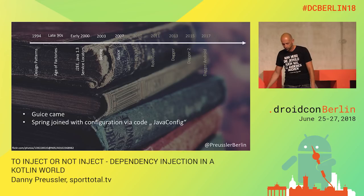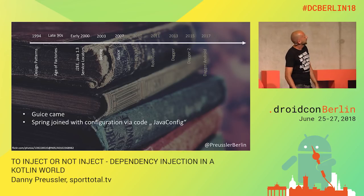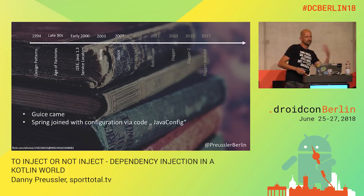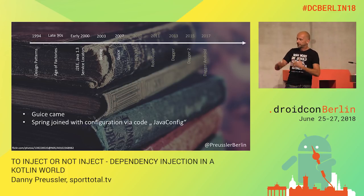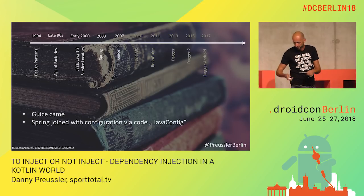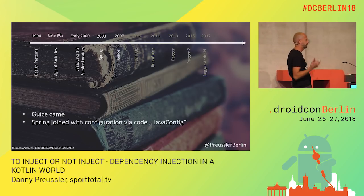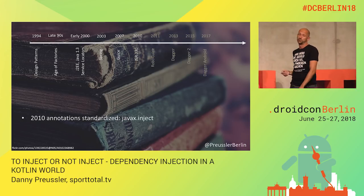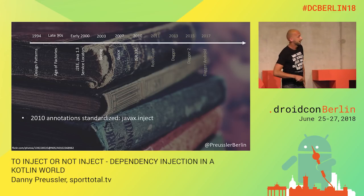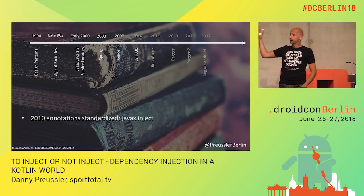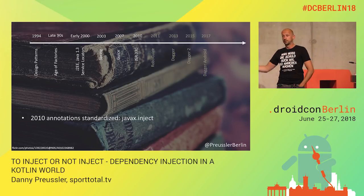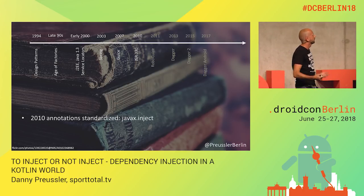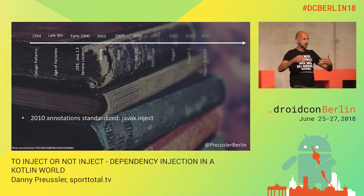Then 2007, Guice came. Interestingly, they reverted the XML thing — XML wasn't a thing anymore, and you would write configuration as part of the code. In 2010, the whole thing was standardized. If you nowadays use @Inject, it comes from javax.inject — that is a standard. Dagger, Toothpick, Guice all comply to this. This was a very important step because they became replaceable by each other.